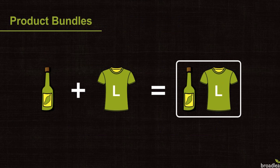For instances when you want to sell several products together, Broadleaf has product bundles. A product bundle is simply a grouping of SKUs that are intended to be sold as a single entity. For example, your company may carry several hot sauces sold together as a variety pack, or a five-pack of one particular hot sauce at a discounted price for bulk buyers.